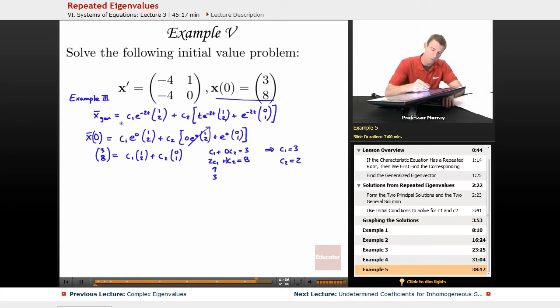So, I've got my 3 and my 2 there, so I'm going to plug those in for c1 and c2. So, I've got c1 was 3, e to the negative 2t times (1, 2), plus c2 is 2 times t e to the negative 2t times (1, 2), plus e to the negative 2t times (0, 1). I'm just copying that general solution now, but I filled in c1 and c2.